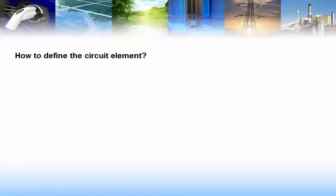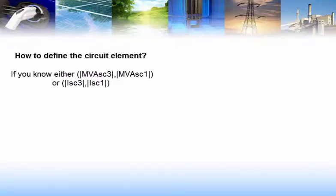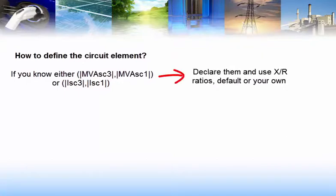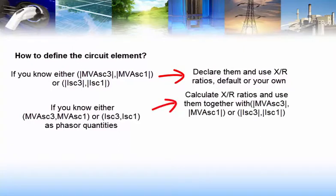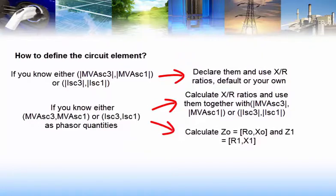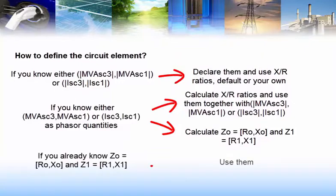To summarize this final discussion, you have three options to define the vSource element. If you know either the module of MVASC3 and MVASC1 or the module of ISC3 and ISC1, you can declare them and use the OpenDSS X over R default ratios or you can define your own. If you know either MVASC3, MVASC1 or ISC3, ISC1 as phasor quantities, you can calculate the X over R ratios by using the equations that we have shown and use them together with these parameters. Or, you can calculate Z0 and Z1 by using the equations that we have shown and specify the vSource element with them. And finally, the easiest way, if you already know Z0 and Z1, just use them.